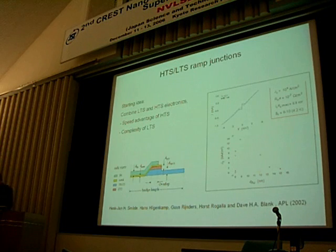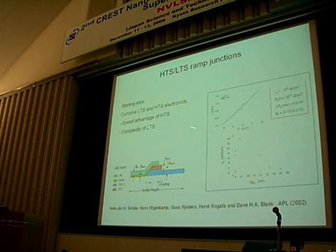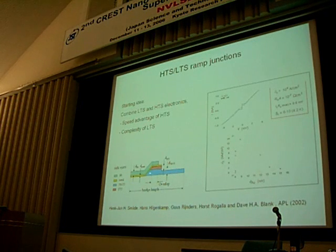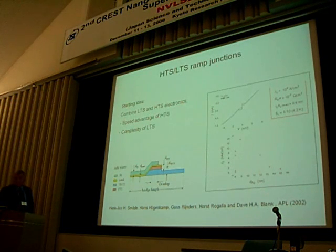Before this project, back around 2001, we sat down with colleagues and thought it would be good if we could just combine LTS and HTS — take the speed advantage of HTS and the complexity advantage of LTS. But if one wants to do this, one needs a very good superconducting connection between low-Tc and high-Tc materials. What we tried was a ramp-type configuration with an HTS-based electrode, a gold interface, and a niobium counter-electrode. This worked, but always with very low critical current and very low reproducibility.